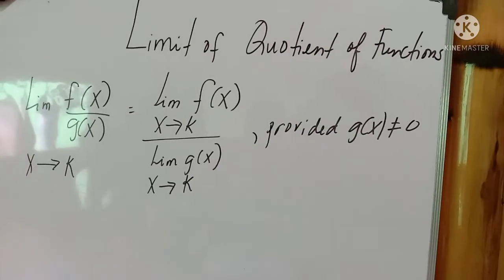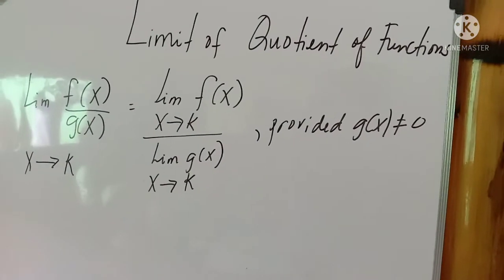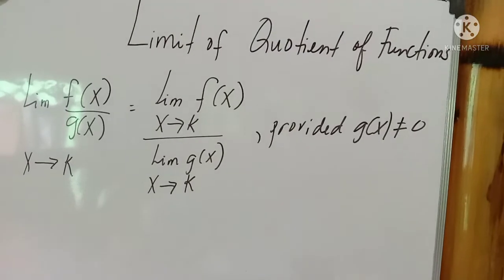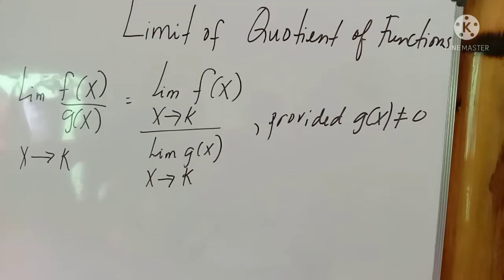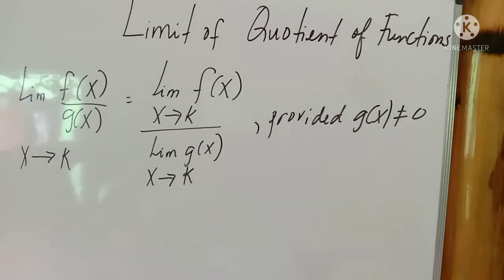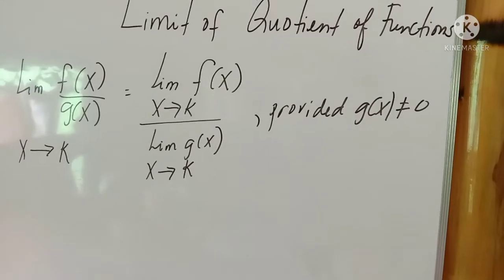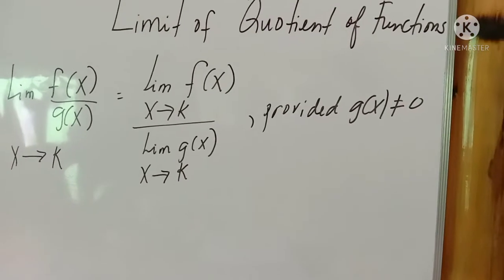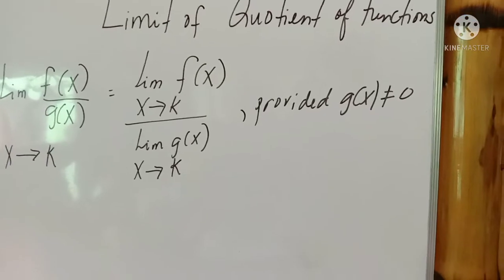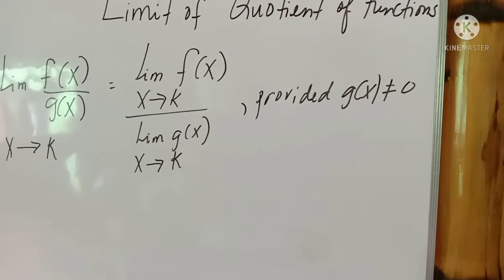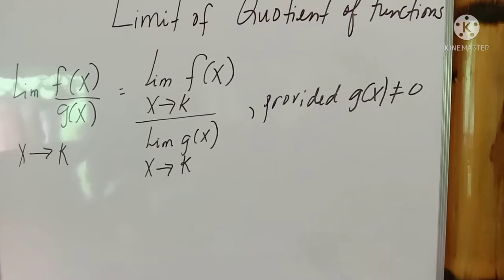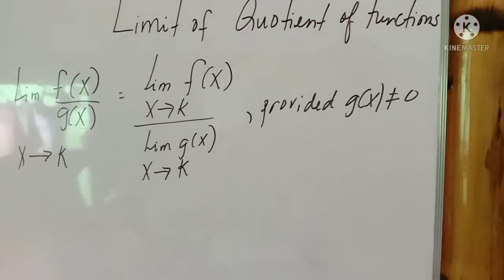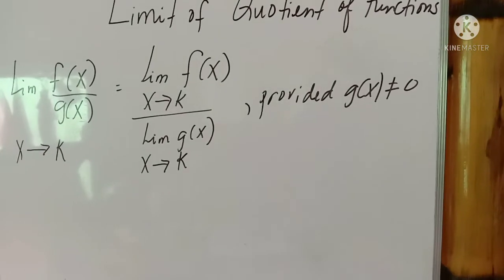The definition of the limit of a quotient of a function: the limit of f(x) over g(x) when x approaches k is equal to the limit of f(x) as x approaches k, over the limit of g(x) as x approaches k, provided that g(x) is not equal to 0. If the denominator is equal to 0, the answer is undefined. Any constant divided by 0 is undefined. This is what we call the limit of a quotient of a function, and let us apply it now in our examples.